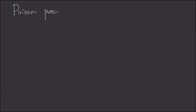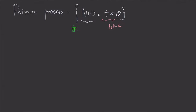How are we in a position to define this Poisson process? First of all, it's a counting process. Its variable is the time, and this counting process is a Poisson process with rate lambda if the following conditions are true.